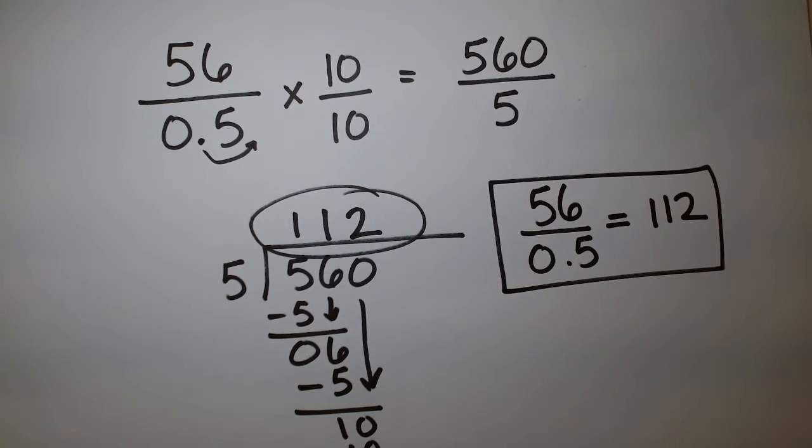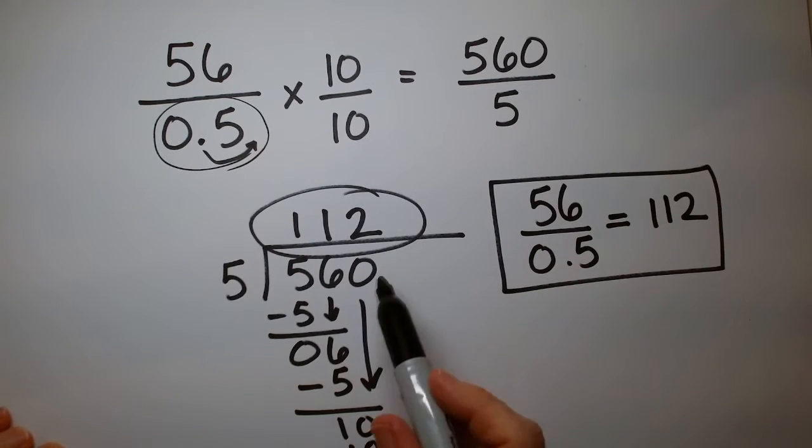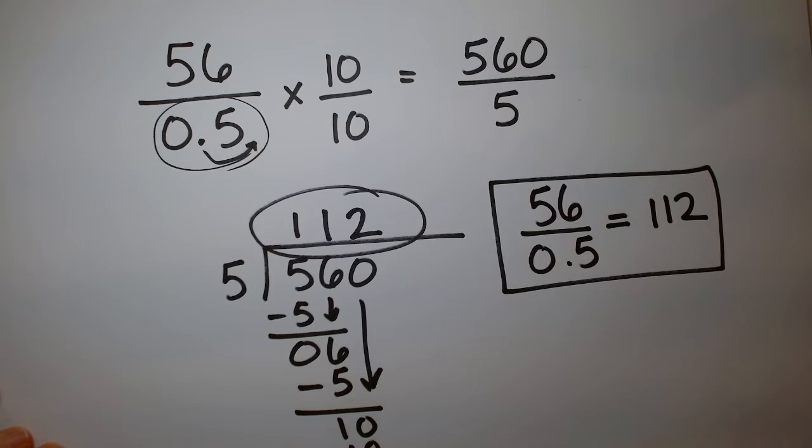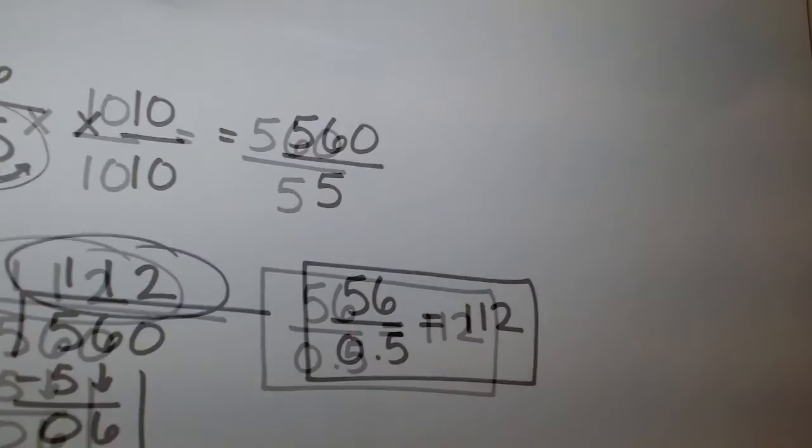Don't forget, you just need to make the denominator a whole number in order to do this problem easily. Let's try one where we have to multiply by something other than 10 over 10.